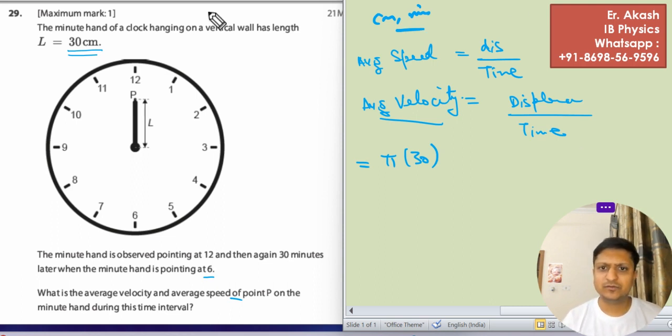So average speed will be the circumference, this distance, upon 30 minutes. The time taken is 30 minutes.